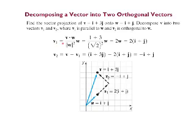v1 equals the dot product of the 2. So that's 1 times 1 plus 3 times 1 and you get 4 divided by the magnitude of vector w squared. So the magnitude of vector w is the square root of 1 squared plus 1 squared which is the square root of 2 and I square it and I get 2.